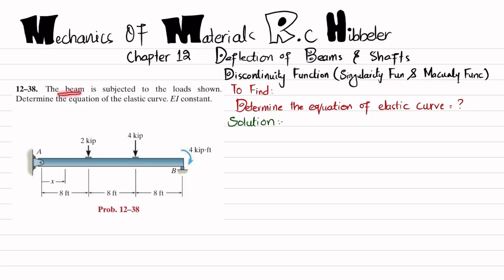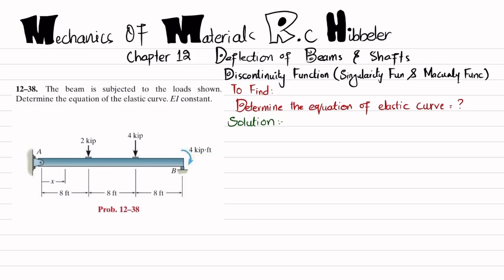The problem statement is: the beam is subjected to the loads as shown; determine the equation of the elastic curve. EI is constant. You can see this is beam AB, having a pin support at point A and a roller support at point B. At one point we have a load of 2 kips, at another point a load of 4 kips, and at the end there is a clockwise moment of 4 kip-feet. We will find the equation of the elastic curve.